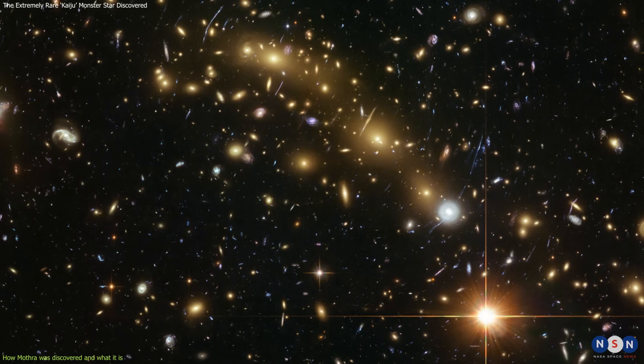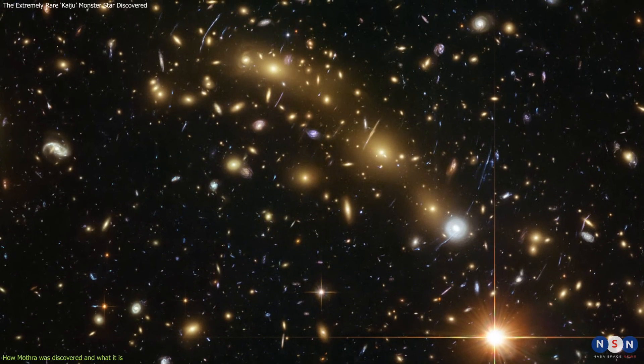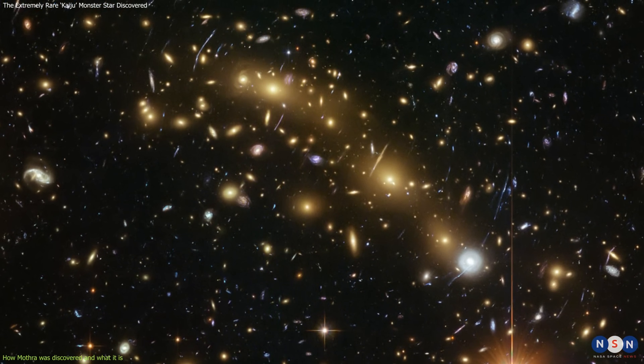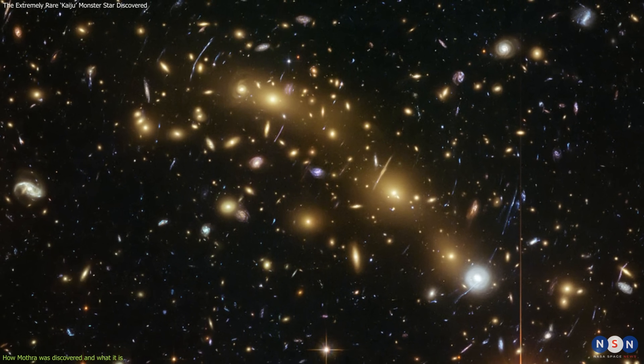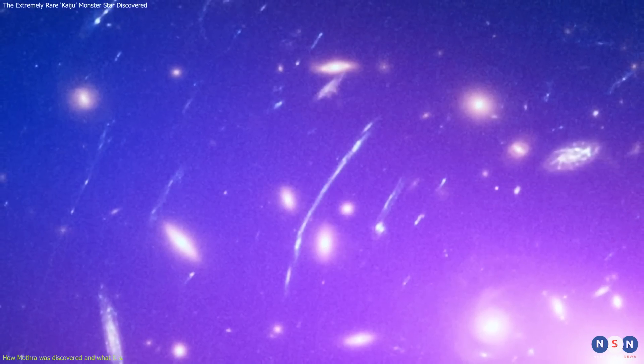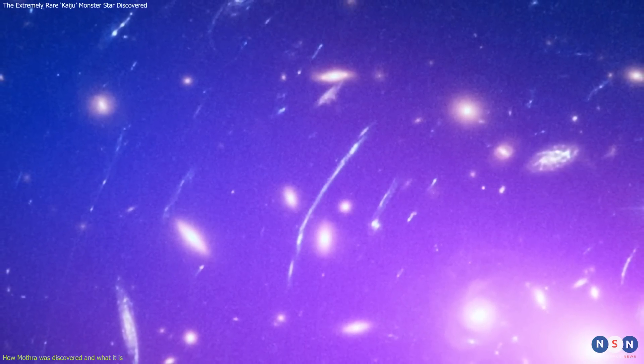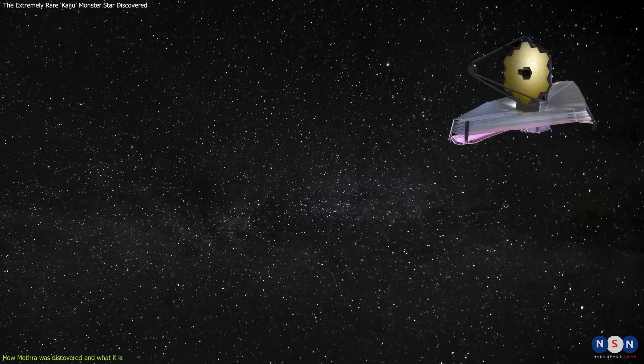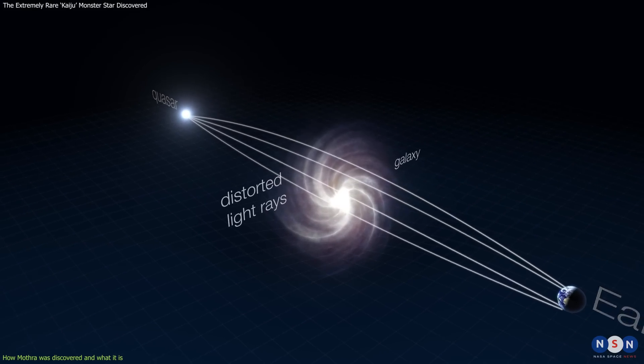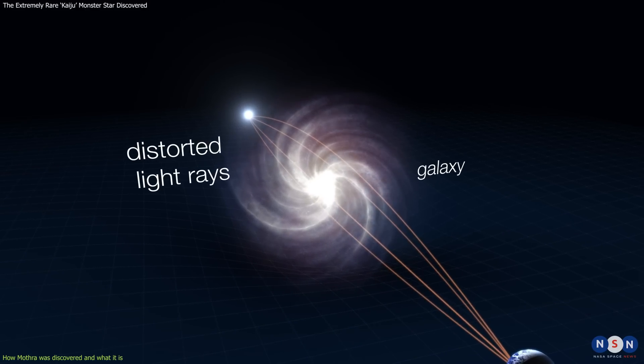This star is located in a region of space that is magnified by the gravity of a galaxy cluster called MACS J0416.1-2403. This cluster acts as a natural lens that amplifies its light by about 2,000 times, making it visible to the James Webb Space Telescope.